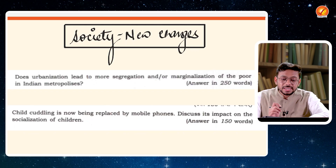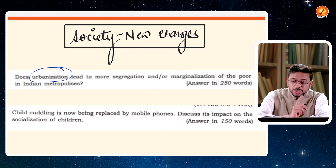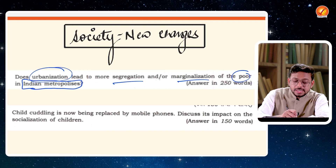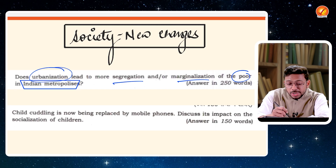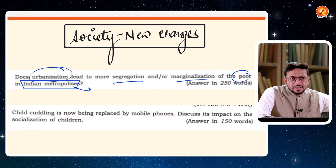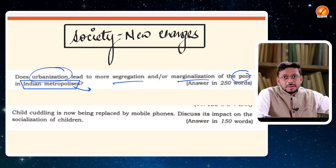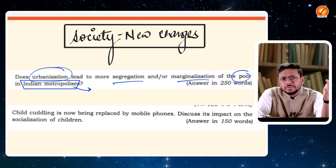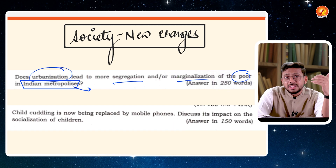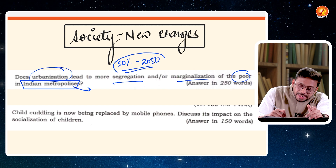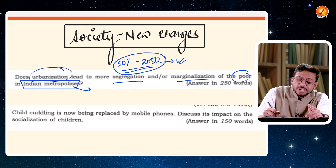The first question is on urbanization — specifically asking whether urbanization leads to more segregation and marginalization of the poor in Indian metropolises. The question is majorly on current happenings. Urbanization as a trend has been there in India for many years, but right now we see rapid growth. More than 35% of India's population lives in urban areas and it is expected to go to 50% by 2050. So urbanization is an issue being discussed a lot in India.